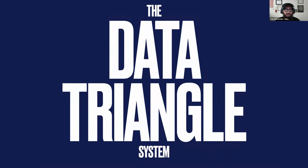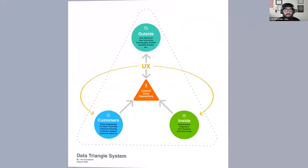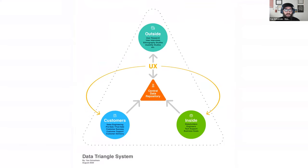What is a Data Triangle System? It's essentially based on three pillars — that's where the triangle comes in. You have the outside, the inside, and the customer. These three will be contributing constantly to a centralized data repository, where typically a design or research department will sift, analyze, tag, organize, and make it available to the entire organization at any given moment.